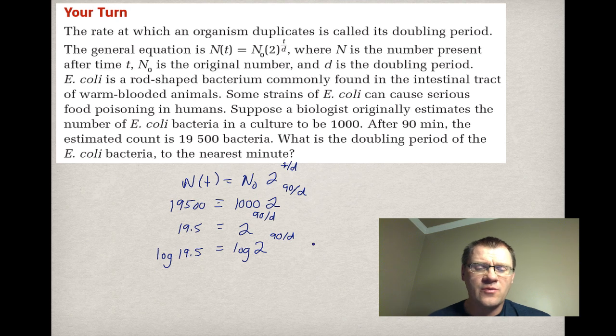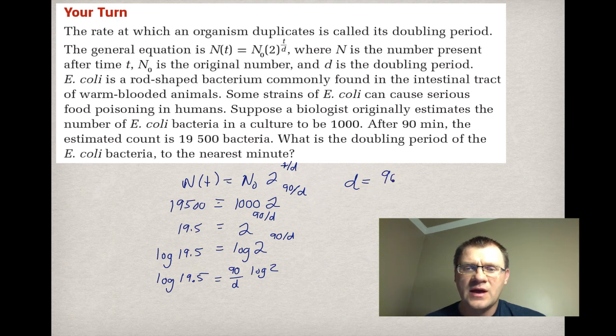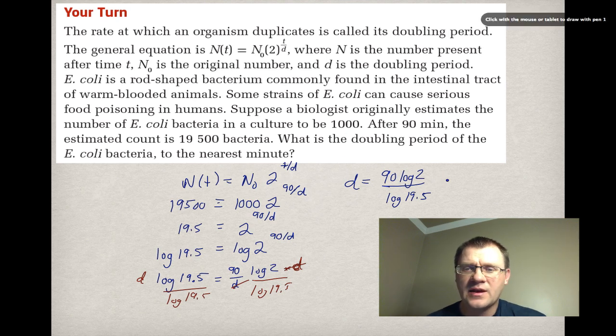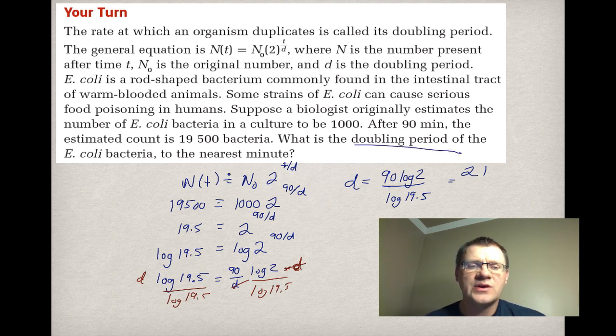Remember our log law that says if we have an exponent, we can move that in front and turn it into a multiplying question. So we get (90/D)·log(2) = log(19.5). Now if I want to solve for D, I'm going to move D up to the other side by multiplying, and I'm going to divide both sides by log(19.5). So what happens then is I get an equation that looks like D = 90·log(2) / log(19.5). I've just multiplied both sides by D and then I divided both sides by log(19.5). In the end, I get an answer, when I plug this into my calculator, I get an answer of 21, which just means it takes 21 minutes for E. coli to double.